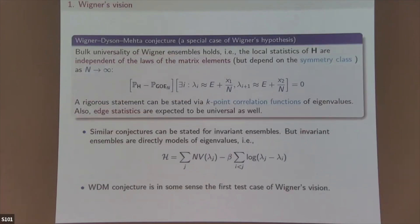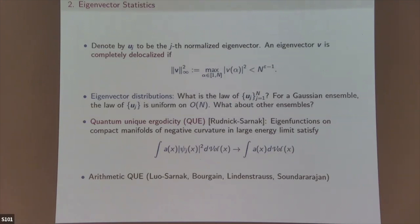Now on eigenvector statistics: the eigenvector l-infinity norm is bounded by n^{-1/2 + ε} — more precisely formulated, but roughly n^{-1/2}. On the other hand, for the GOE the eigenvector distribution is given by the orthogonal group. For other ensembles that are not Gaussian and not rotation invariant, this is a very important question.